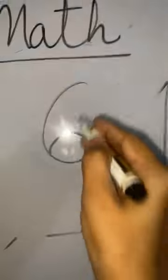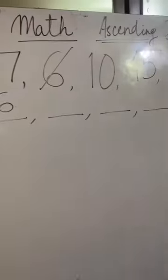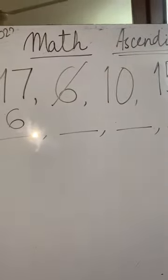What is that? Six. Now I will cross the number. Now we have four numbers. See: 17, 10, 15, 8. Smallest number?